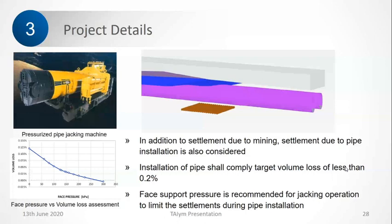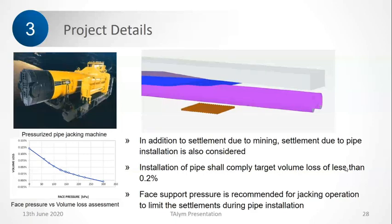As I hinted in previous slides, most of the settlements in such excavations happen during the installation of the top pipe roof. So it was very important to ensure there was not too much settlement during that stage. We did a sensitivity study to estimate what is the optimum face pressure required to maintain minimum volume loss. This was maintained at the pipe roof level at the top, because most of the excavation happens at this stage. Once this is stabilized, the rest of the excavation will not cause much disturbance, as it acts like a beam spanning from shaft to shaft.